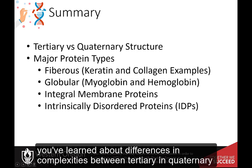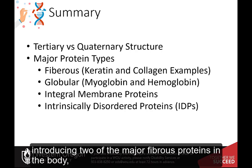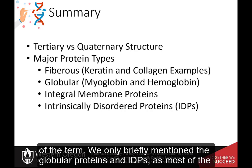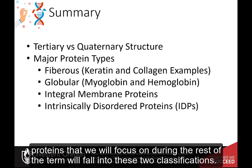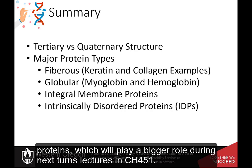In this section, you have learned about differences and complexities between tertiary and quaternary protein structures and the major protein structural types. We spent a lot of time introducing two of the major fibrous proteins in the body, keratin and collagen, as we will not really revisit this type of protein through the rest of the term. We only briefly mentioned globular proteins and IDPs, as most proteins we will focus on during the rest of the term will fall into these two classifications. We also introduced the different types of integral membrane proteins, which will play a bigger role during next term's lectures in Chemistry 451.